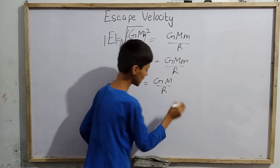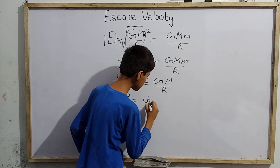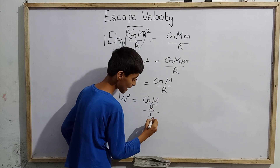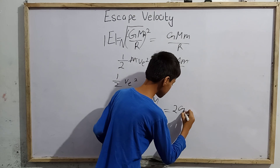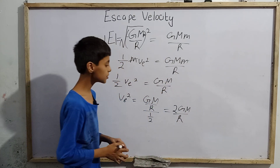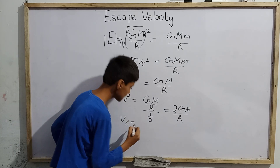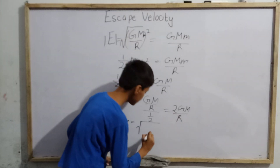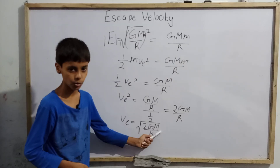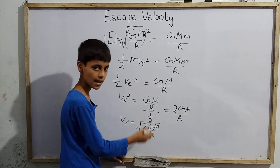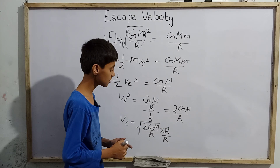So half v_e squared equals GM divided by r. Transferring the half to the other side, v_e squared equals 2GM divided by r. We found 2GM divided by r. To find v_e, we take the square root: v_e equals the root of 2GM divided by r. To simplify this further, we multiply numerator and denominator by r.